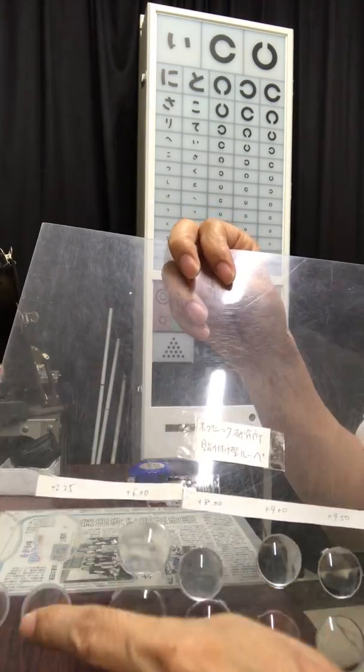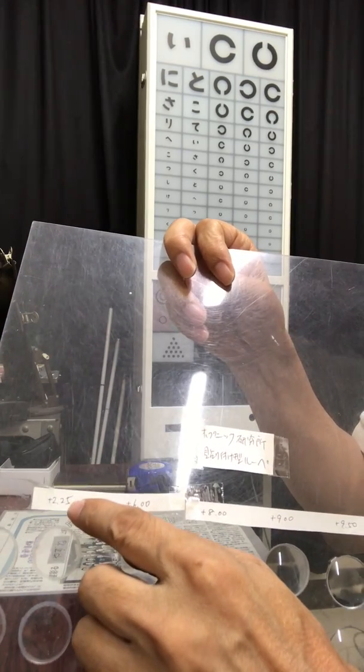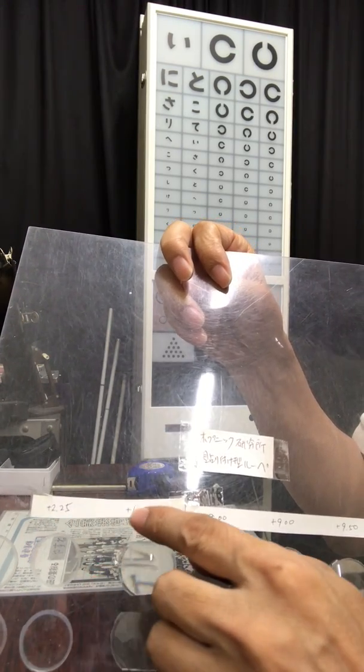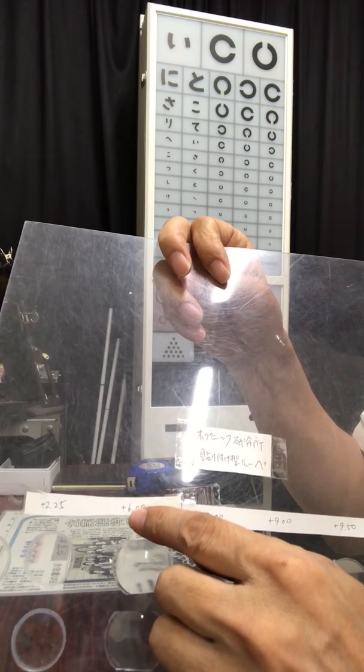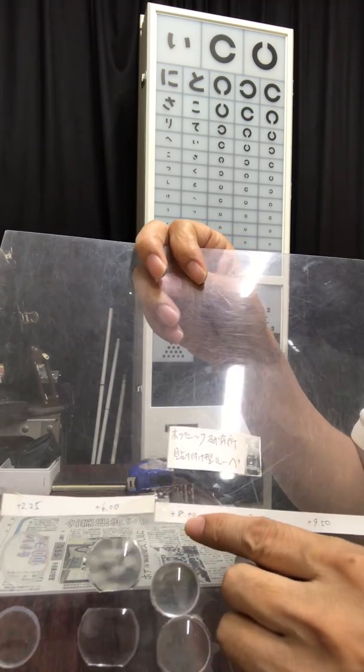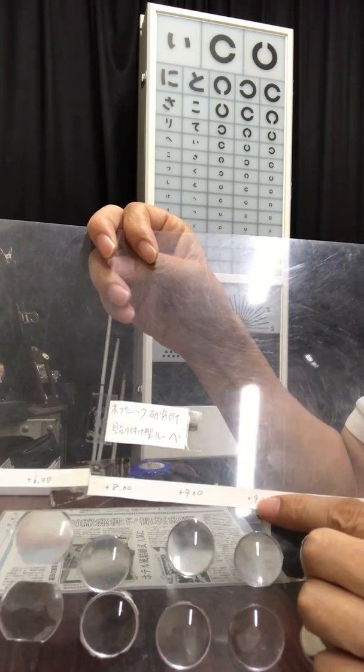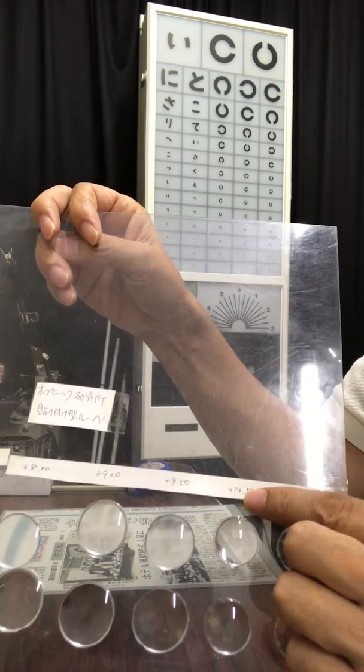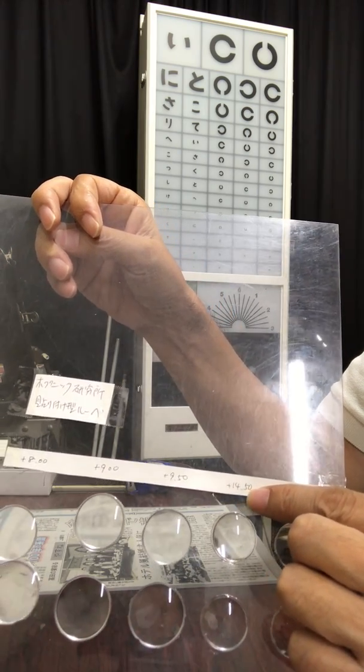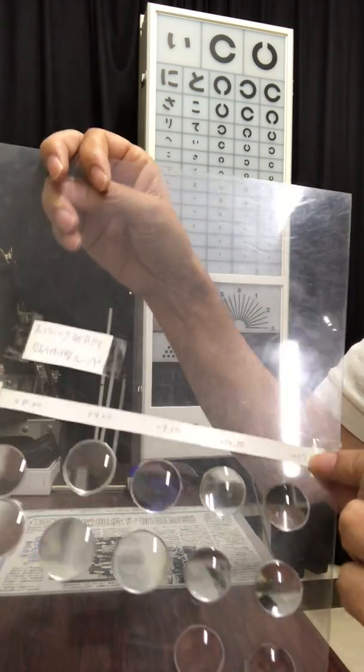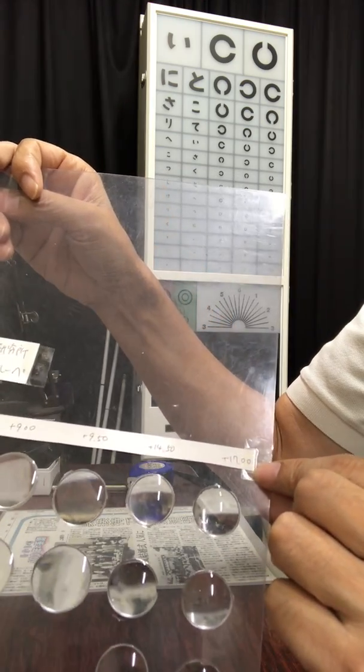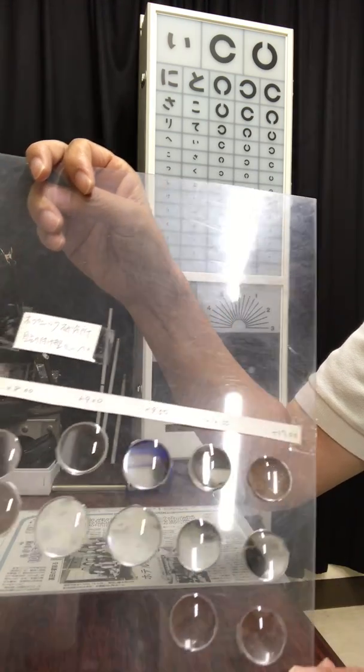It varies from 2.25 diopter to 6, 8, 9, 9.5, 14.50 to 17.00 diopters.